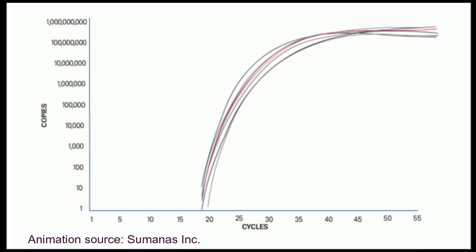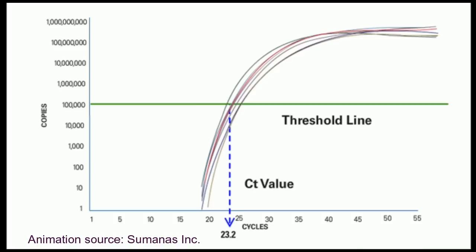Within the exponential phase, two values are calculated. The threshold line is the level of detection, or the point at which a reaction reaches a fluorescent intensity above background level. The PCR cycle at which the sample reaches this level is called the cycle threshold or CT. The CT value is used for downstream quantification of presence or absence.